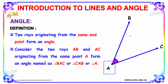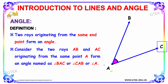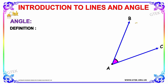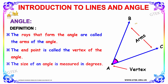Considering the two rays AB and AC, the point B, A, C forms an angle, and C, A, B forms an angle as well. The rays that form the angle are called the arms of an angle. The end point is called the vertex of an angle — here A is the vertex. The size of an angle is measured in degrees, for example 40 degrees.